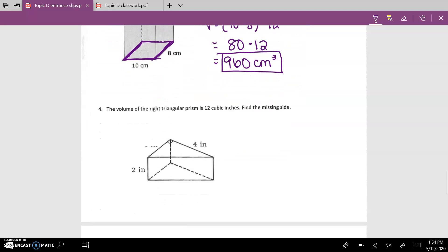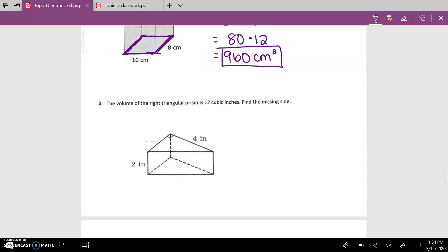80 times 12 gives me 960 centimeters cubed. Those are the first three. Now the last one says the volume of the right triangular prism is 12 cubic inches. Find the missing side.